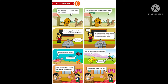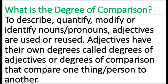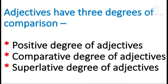If you look at the words like higher and more important, all this comes under degrees of comparison. Now I am going to give you a short introduction of degrees of comparison — we will see it later when the regular classes start. To describe, quantify, modify, or identify nouns or pronouns, adjectives are used. Adjectives have their own degrees called degrees of adjectives or degrees of comparison, which compare one thing or person to another. Adjectives have three degrees: positive degree, comparative degree, and superlative degree.